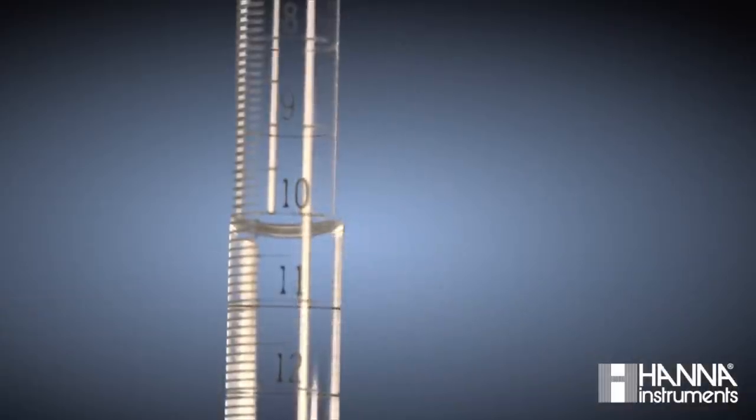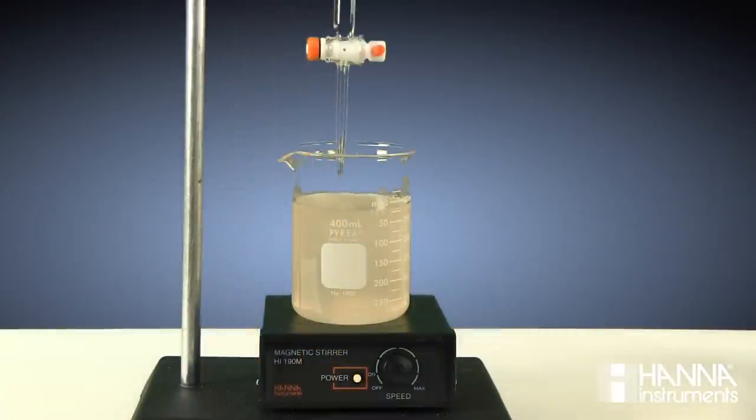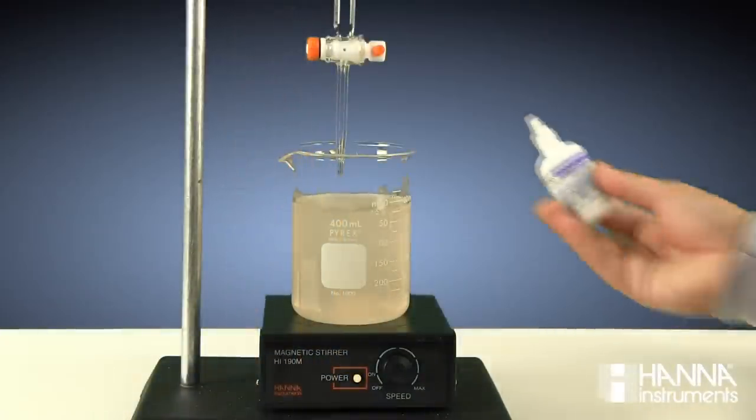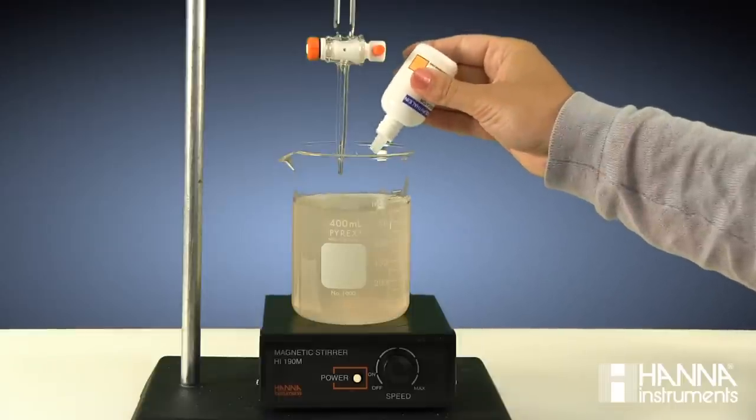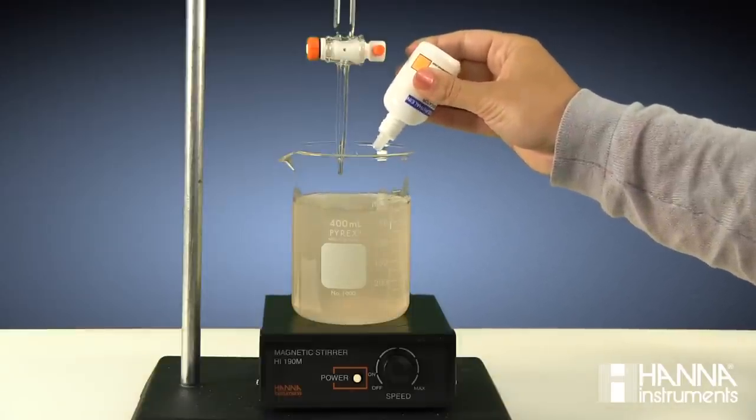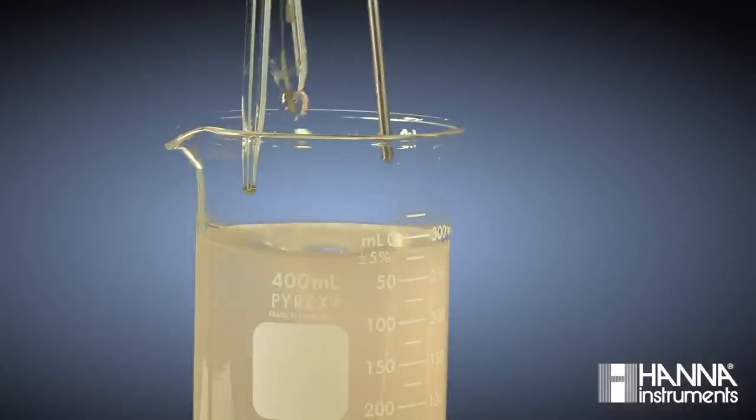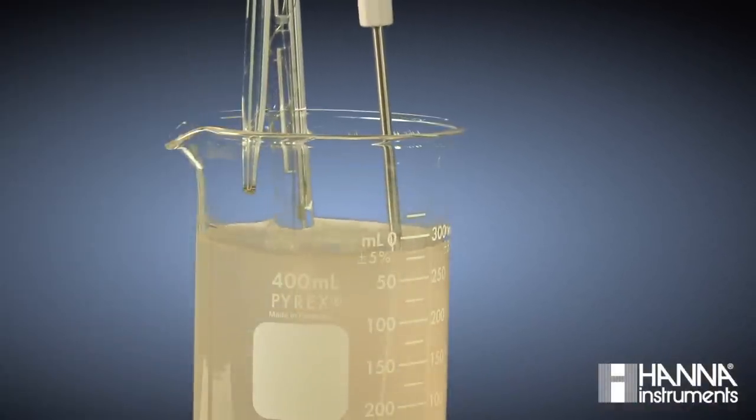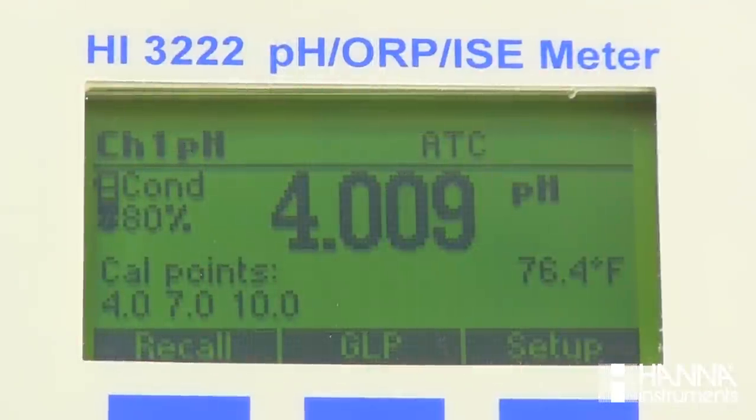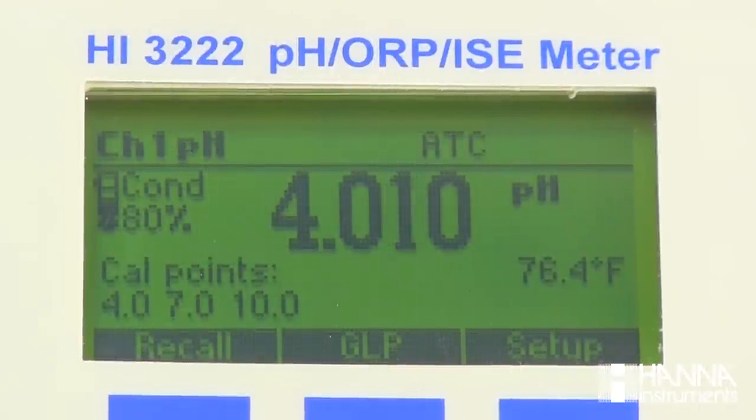Reading our meniscus, we record that our starting volume for titrant is 11.62 milliliters. Once we have our sample stirring, we add four drops of our color indicator phenolphthalein. We immerse our temperature probe and our pH electrode in the solution, making sure the reference junction is submerged. We observe that our starting pH is just above 4.